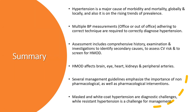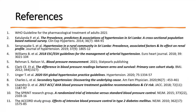In conclusion: hypertension is a cause of morbidity and mortality globally and locally, with rising prevalence trends. Multiple blood pressure measurements — office or out-of-office — adhering to correct technique are required for correct diagnosis. Assessment includes comprehensive history, examination, and investigations to identify secondary causes, assess cardiovascular risk, and screen for hypertension-mediated organ damage. Several guidelines emphasize both non-pharmacological and pharmacological interventions. Masked and white coat hypertension are diagnostic challenges, while persistent hypertension is a management challenge.